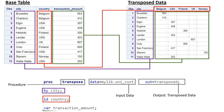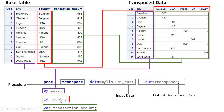The output data will be named 'transposed'. After the first line ending with a semicolon, we have three elements: BY, ID, and VAR. Let's look at the significance of all three. With BY, you provide the column name or variable name which you do not want to transform at all - in our case that was city.